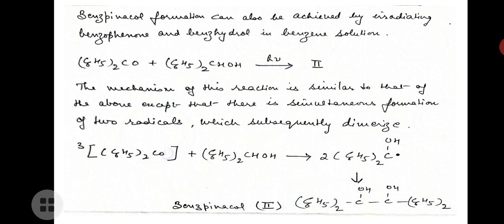The same process occurs: benzophenone in the ground state absorbs a photon and is excited to the singlet excited state, which undergoes intersystem crossing to form the triplet excited state of benzophenone. The triplet excited state of benzophenone plus benzohydrol in benzene solution gives rise to two radicals, which dimerize and form benzpinacol.